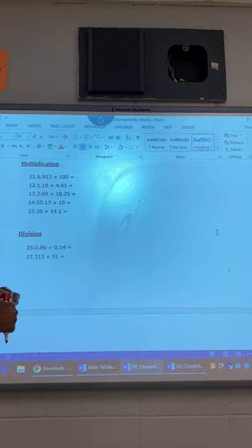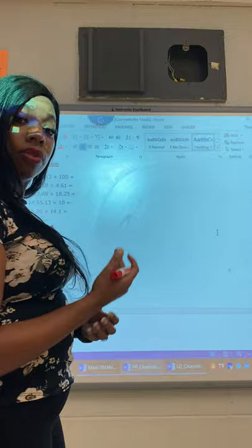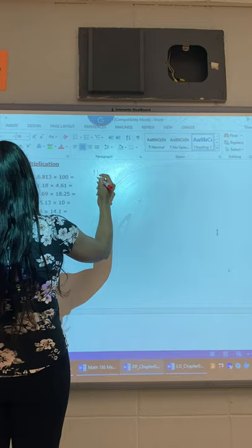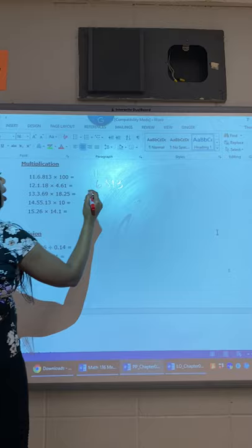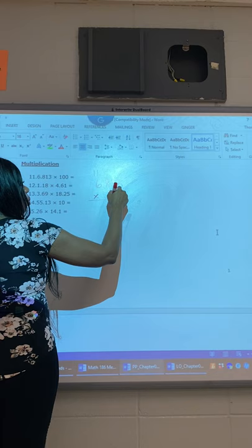Now multiplication and division. Sometimes I may not have my nifty calculator with me, so I have to solve the calculations manually. For example, number 11, I have 6.813 times 100.